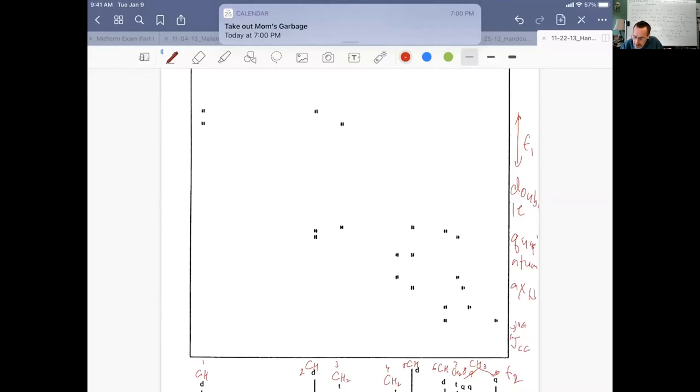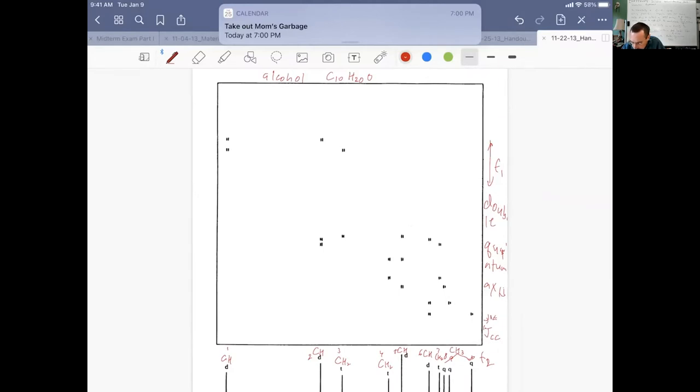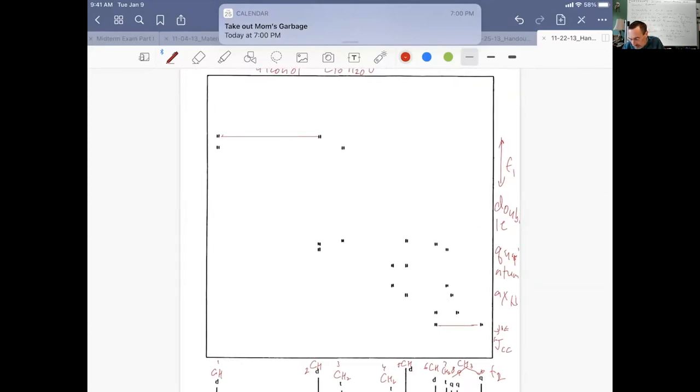These two carbon resonances are coupled to each other. That's the power of inadequate because we're going to get the whole spectrum built up this way. The double quantum axis is essentially the sum of the frequencies of the two resonances, so it runs diagonally across the spectrum. Here we're going to see it going slanting downwards to the right.